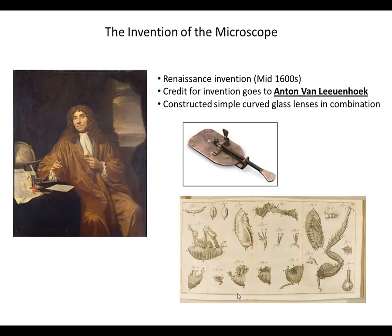Leeuwenhoek was, by trade, a merchant. He traded in fine oriental silks, carpets, and rugs, and he wanted to be able to prove to his customers that he had the finest quality cloth. He started off by constructing simple curved glass lenses and using them as a magnifying glass to magnify the cloth he was looking at. When he used them in combination, he was able to get even greater detail and magnification, so he constructed a very simple curved glass lens combination microscope — we see a picture of that here in the middle.